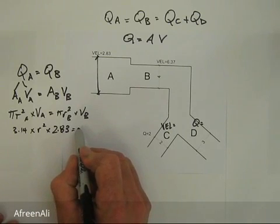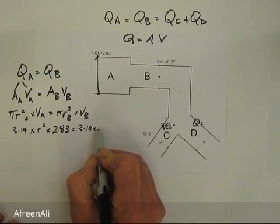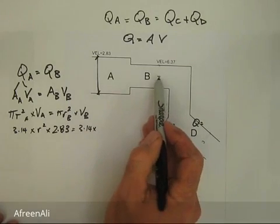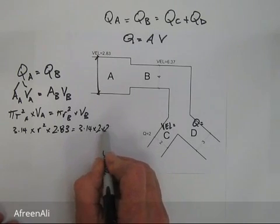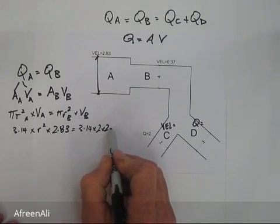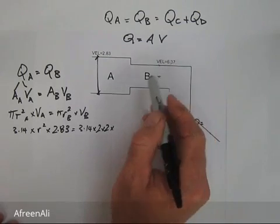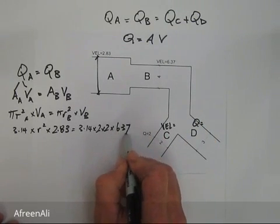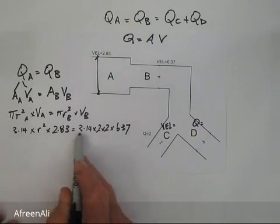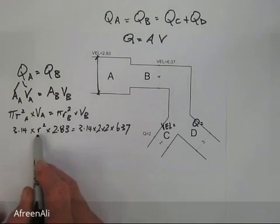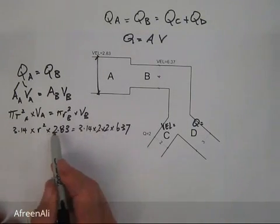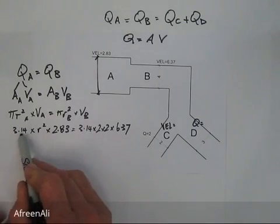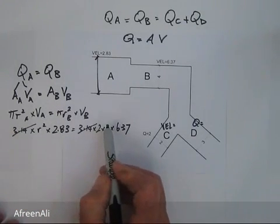On the right side: pi times the radius at B squared, times the velocity at B, 6.37. We're given the diameter at B is 4, so the radius is 2, and 2 squared is 4. We have 3.14 on both sides, so we can cancel those out.